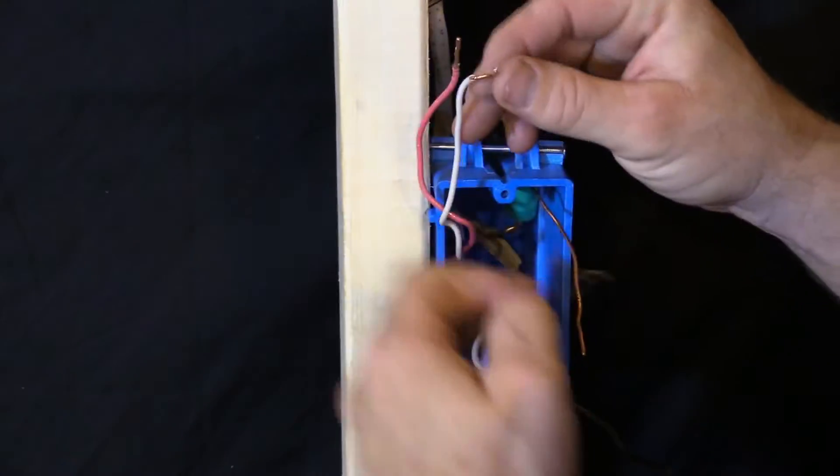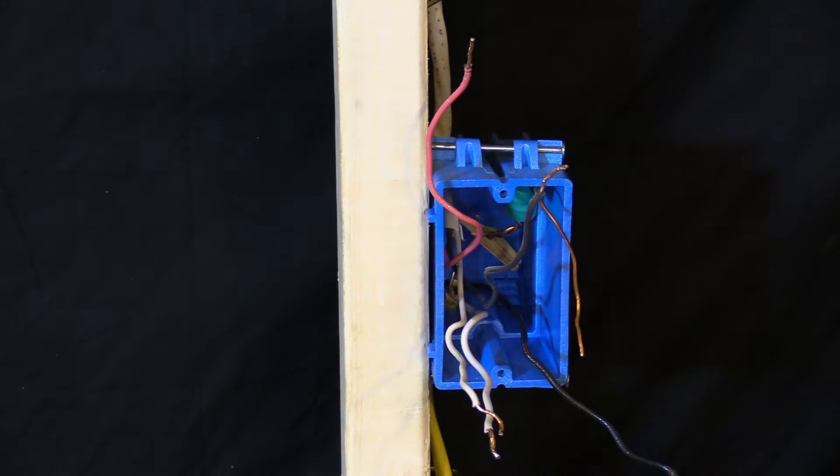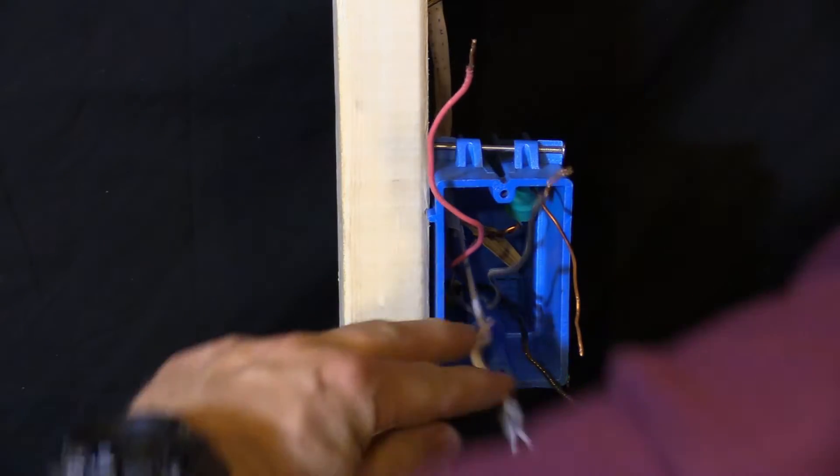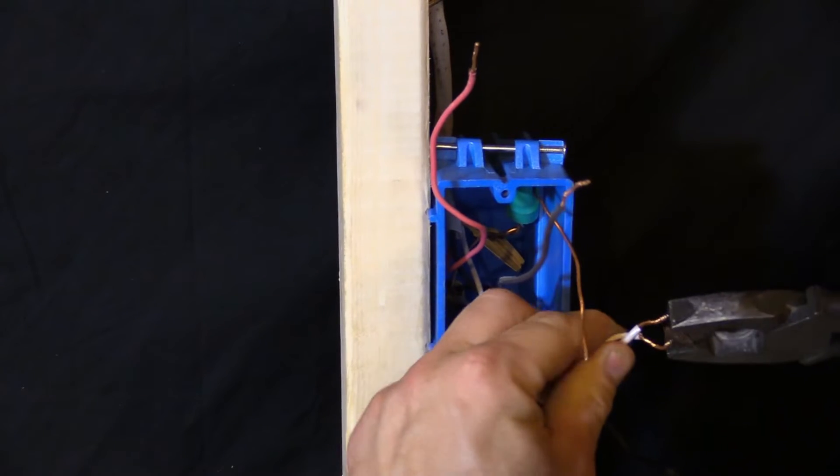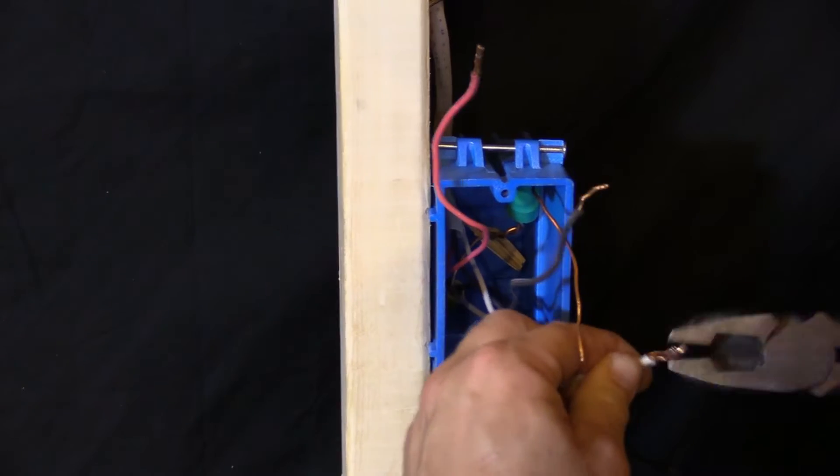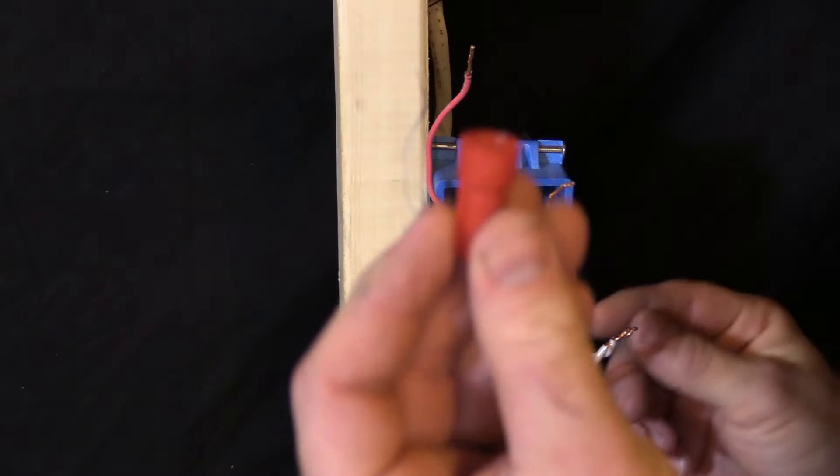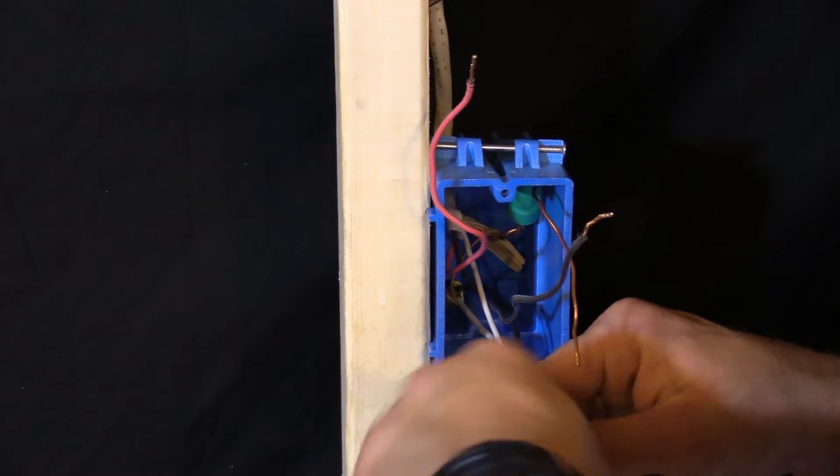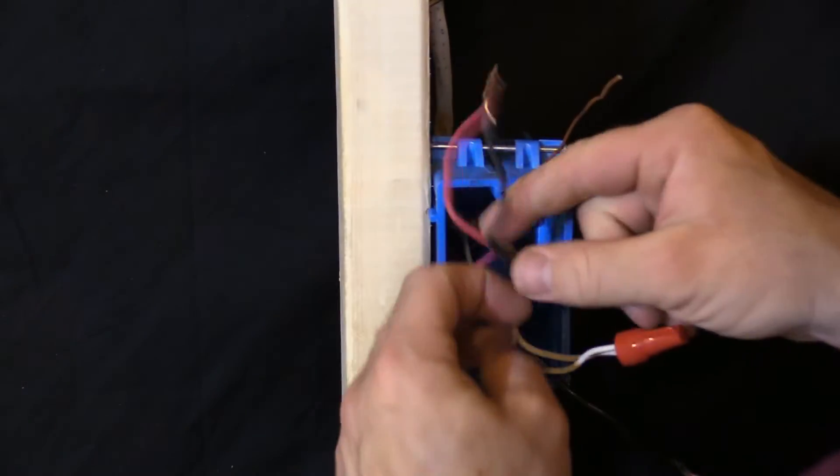All right, next thing you're going to do is you're going to take your neutrals. Like I said, there's many ways to make these boxes up. This is the way that I'm doing this one, this is the easiest route. There's literally several different ways to do it. All right, so all you're going to do is you're going to take your neutrals and you're going to twist them together. You're gonna stick a yellow or red wire nut on - I got red so that's what I'm using. We'll push these out of the way, push these back in the box.